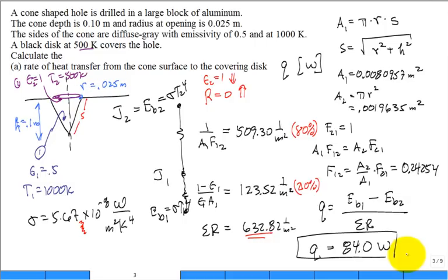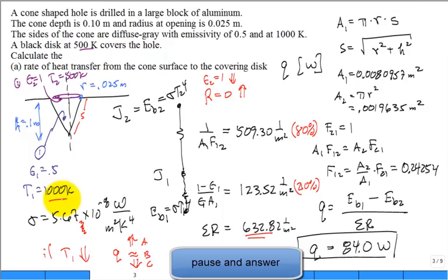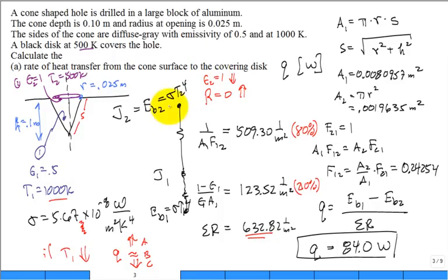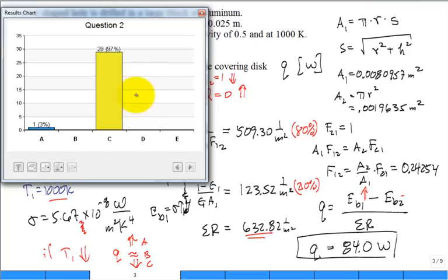Do you want another clicker question? Sure, go for it. So, if the temperature of 1 goes down, what happens to Q? Does it go up? Answer A, stay about the same, Answer B, or go down? Answer C. What happens to the rate of heat transfer if T1 goes down? It was 1,000, maybe it goes to 950 or 900 Kelvin. We always remember that the EB is what drives the radiative transfer, the blackbody emissive flux. It's equal to sigma times T to the fourth. If temperature goes up, you've got a stronger EB. So this was going to go up. This was unchanged. You're going to get a larger Q. The T goes down, the blackbody emissive flux goes down. The difference in the EBs goes down. Very good.